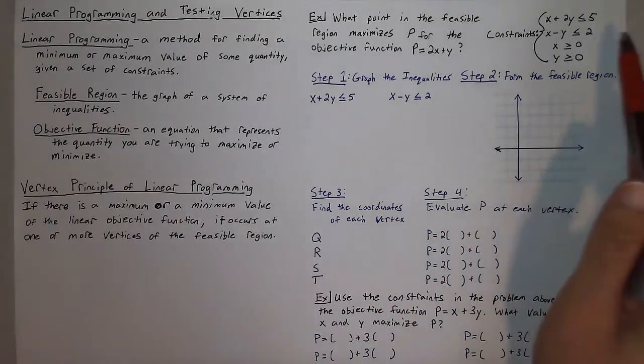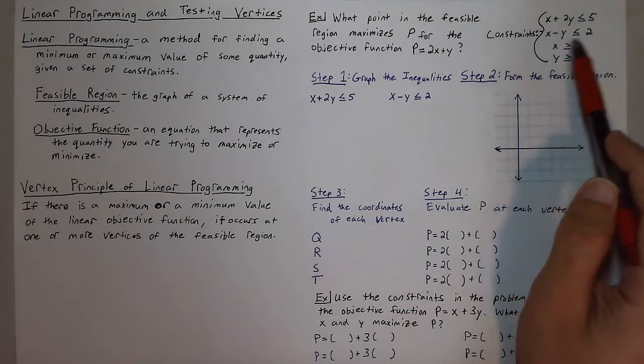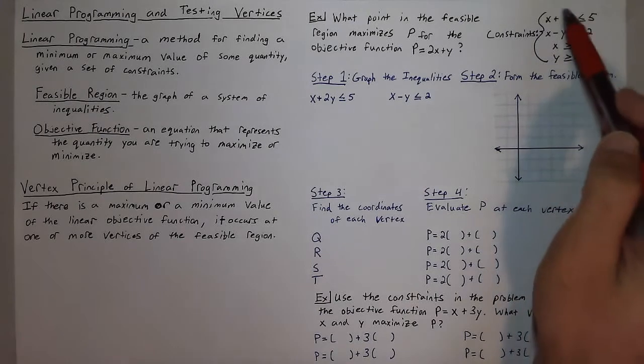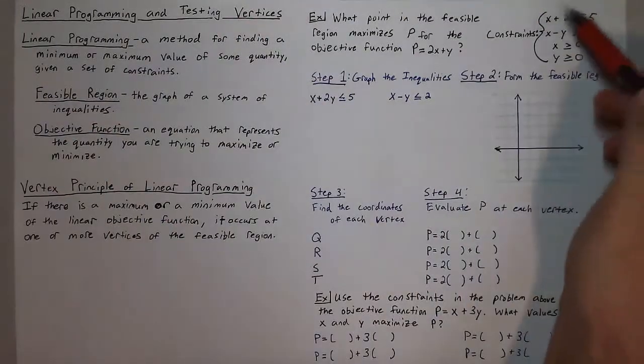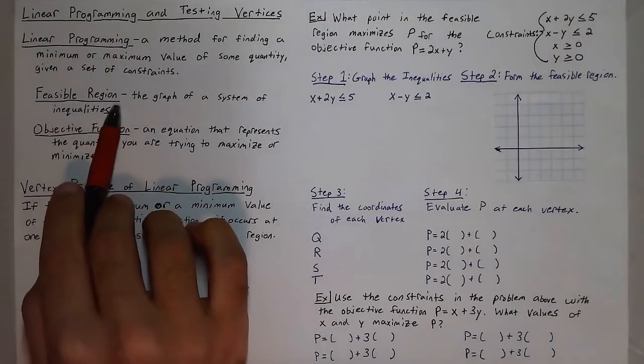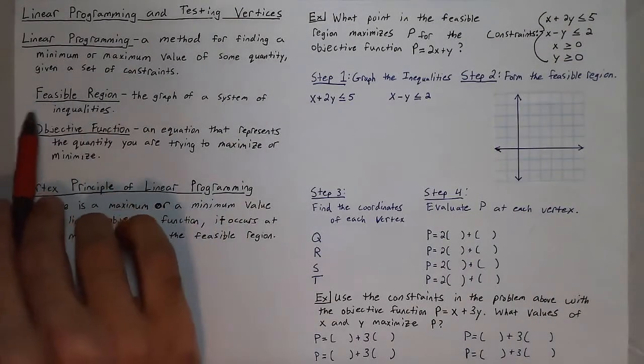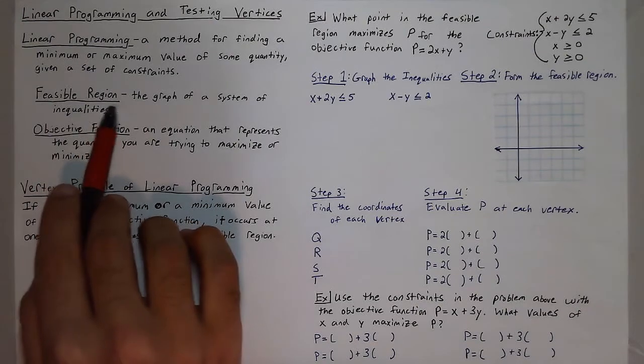Now constraints are these linear inequalities that we create, and usually we find them in a system when doing linear programming problems. Now when we get a graph of that system, that is known as the feasible region. This is where our solutions lie, it's where we shade in, where they all intersect.